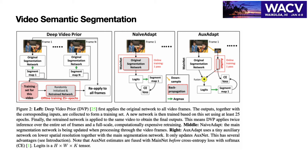Although it takes less compute than Deep Video Plot, updating the model itself leads to a model collapse problem. In practice, we see that after a few hundred frames of adaptation, some weak segmentation classes will disappear in the output.